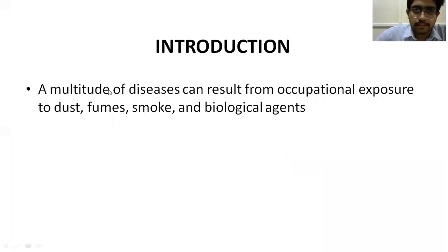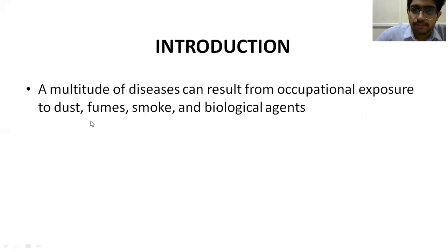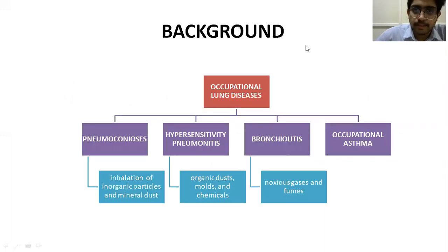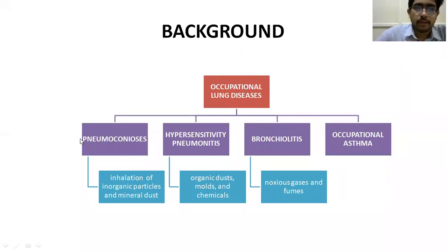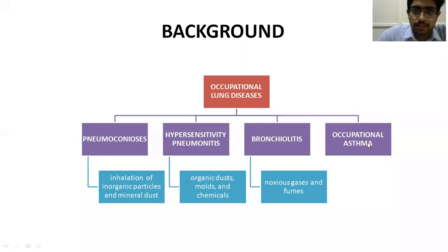Coming to the introduction, occupational lung disease is a multitude of diseases that can result from occupational exposure to dust, fumes, smoke, and biological agents. Coming to the background, the occupational lung diseases are widely classified into four major types: one is pneumoconiosis, the second is hypersensitivity pneumonitis, the third is bronchiolitis, and the fourth is occupational asthma.